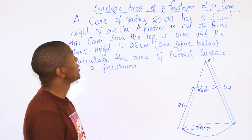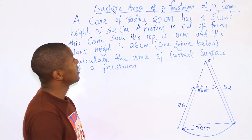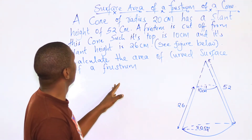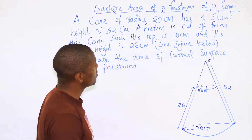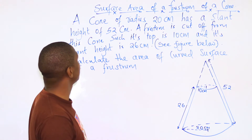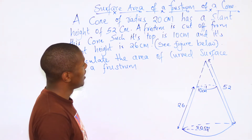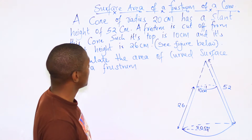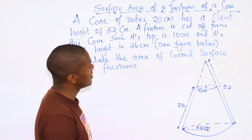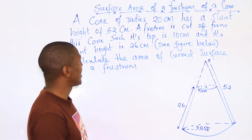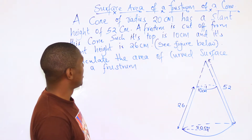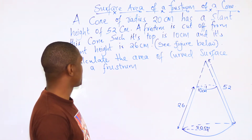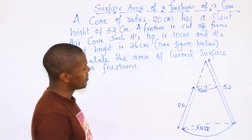Hello, today we are going to discuss how to find the surface area of a frustum of a cone by considering a KCC question, which reads: a cone of radius 20 cm has a slant height of 52 cm, and the frustum is cut off from this cone such that its top is 10 cm and the slant height is 26 cm. We have been asked to calculate the area of the curved surface of a frustum.